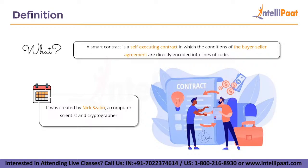A Smart Contract is a self-executing contract in which the conditions of the buyer and seller agreement are directly encoded into lines of code. The code and agreements contained within it are dispersed and decentralized over a blockchain network. Transactions are trackable and irreversible, and the code controls the execution.